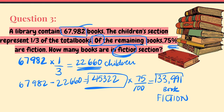So we did three steps: first, divide by three to find the children's section; second, subtract that from the total to get the remaining books; and third, do the actual percentage calculation. Do it step by step.